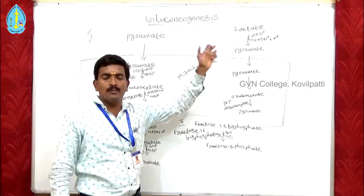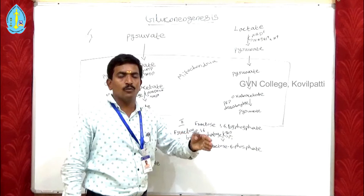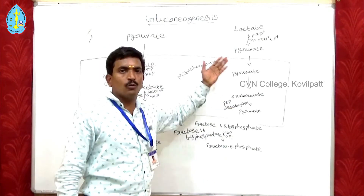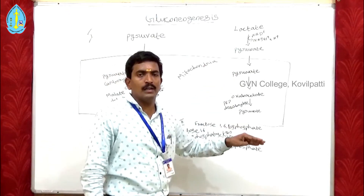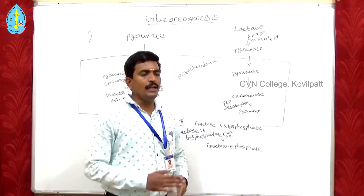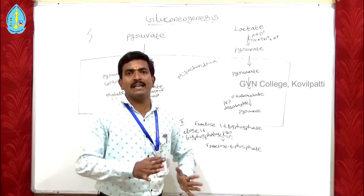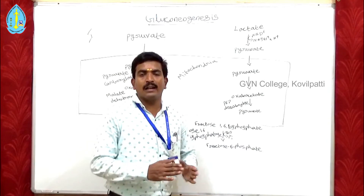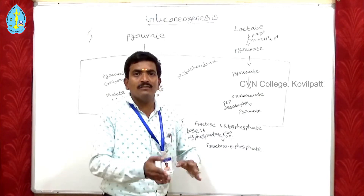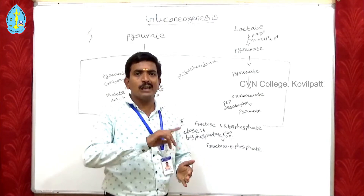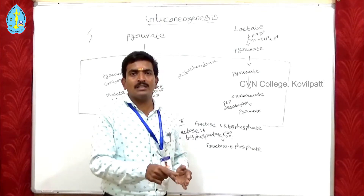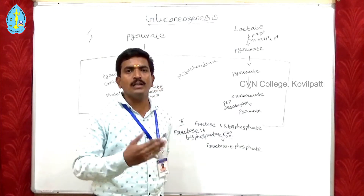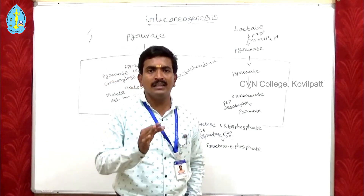Gluconeogenesis means the conversion of a new sugar, or conversion of glucose from non-carbohydrate precursors. It is the reverse of glycolysis. But glycolysis and gluconeogenesis are not the same as a fully reversible process. Seven of the ten glycolysis steps are reversible, but three of the processes are irreversible.